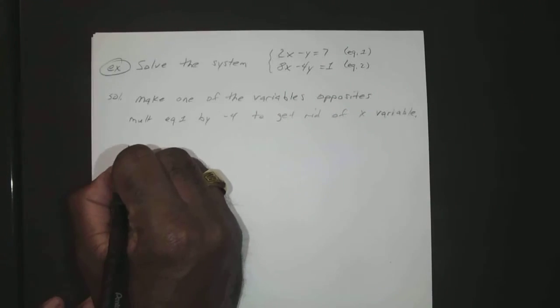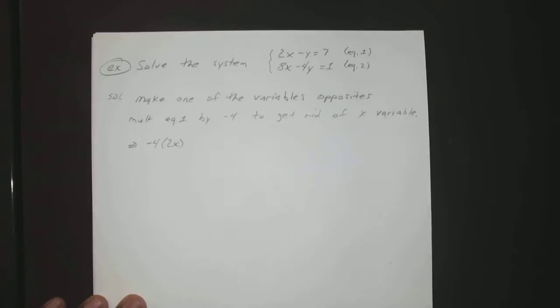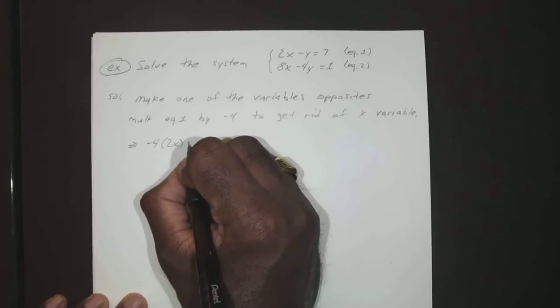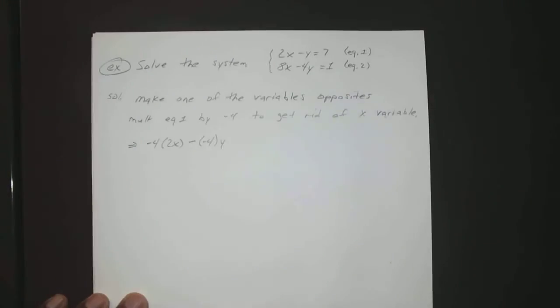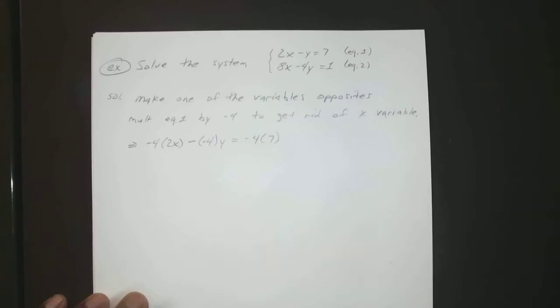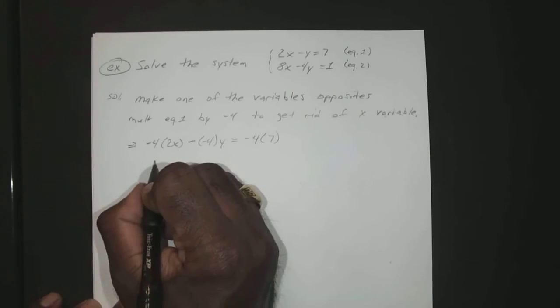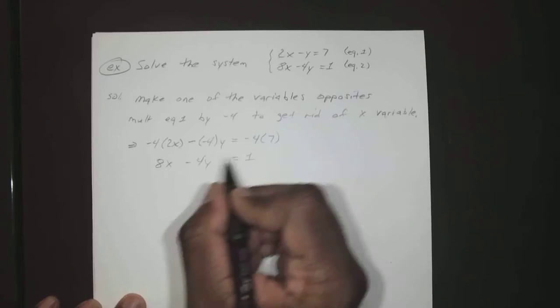Okay, so that would give us -4 times 2x minus -4 times y equals -4 times 7, and the second one will just stay the same, 8x - 4y = 1.